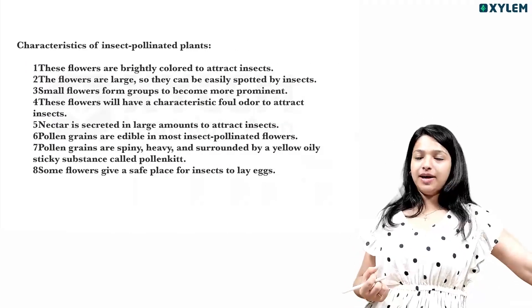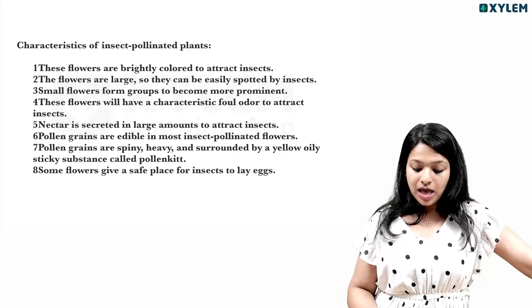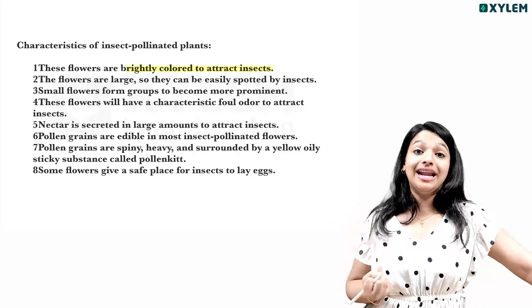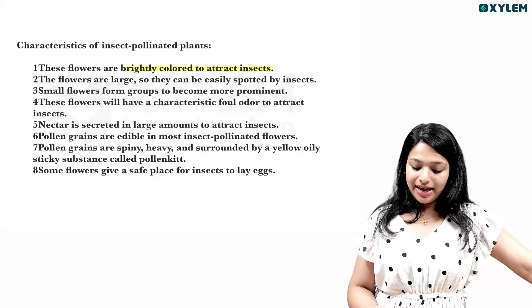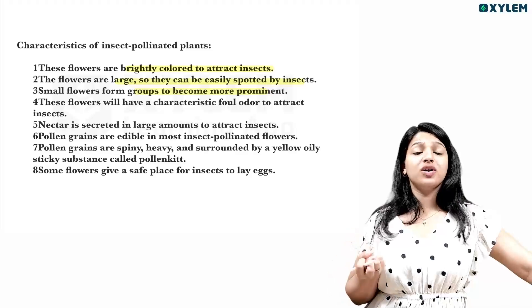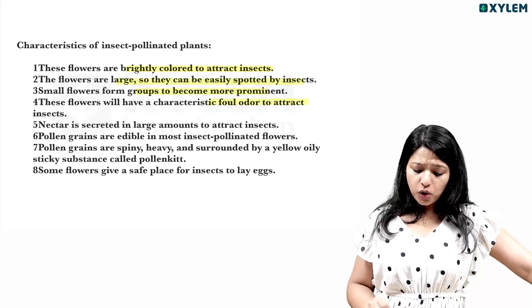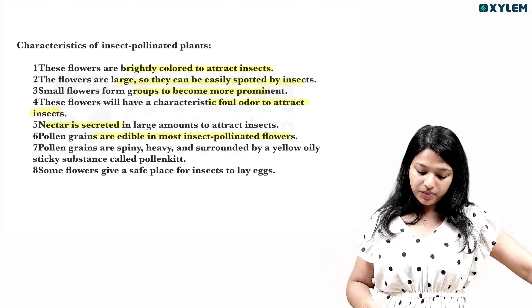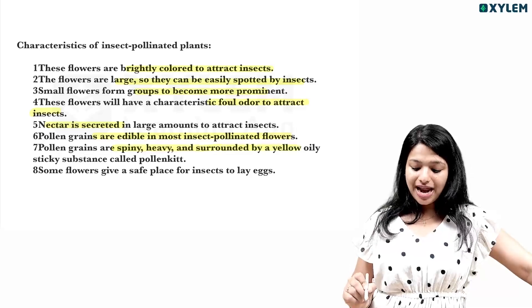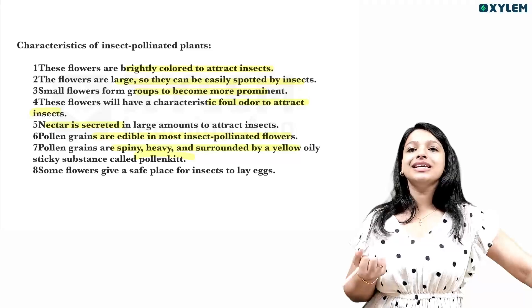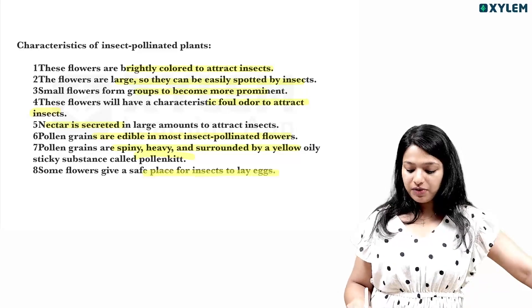Insect-pollinated flowers are large and easily spotted by insects. Small flowers are grouped to form more prominent inflorescence. They have a strong odor to attract insects, nectar is secreted, pollen grains are edible. In most insect-pollinated flowers, pollen grains are spiny, heavy, and surrounded by a yellow oily sticky substance called pollen kit.